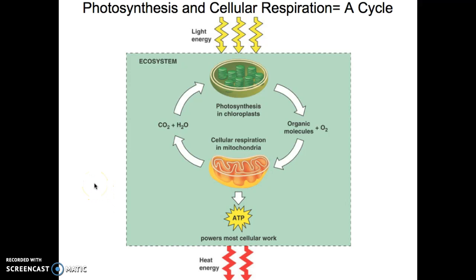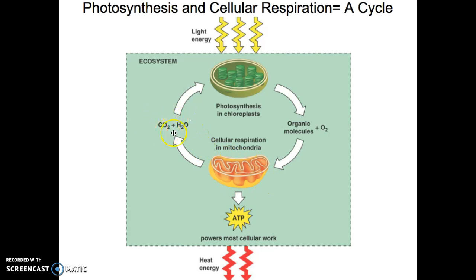Photosynthesis and cellular respiration are a cycle — they are opposite cycles. Photosynthesis gets energy from the Sun and makes glucose and oxygen. That glucose and oxygen go into the mitochondria, which makes ATP energy that powers everything in an organism, releasing heat. The mitochondria produce carbon dioxide and water as byproducts, which photosynthesis then uses. It's one big cycle. Great job everybody — study hard!